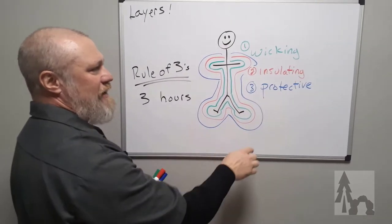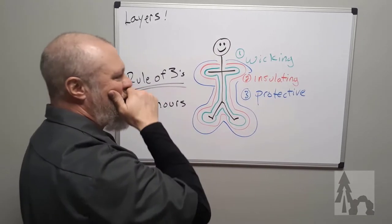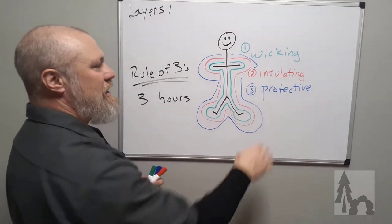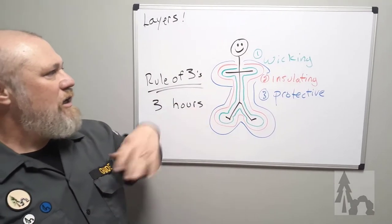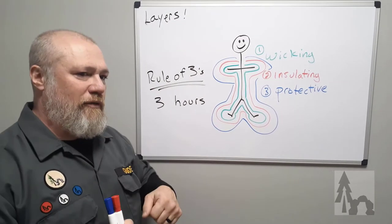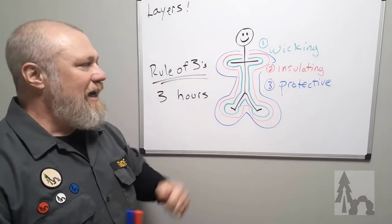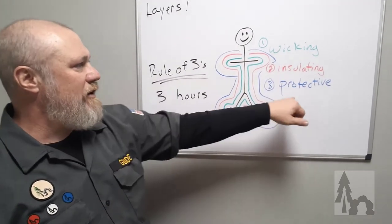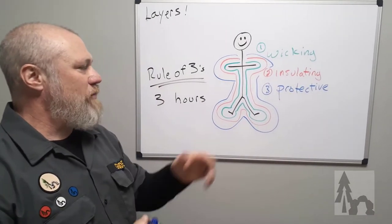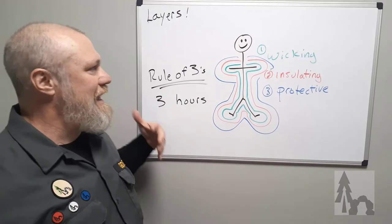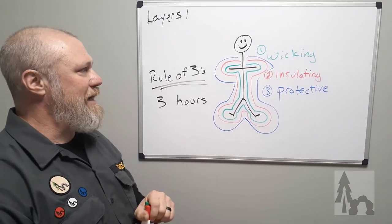Wicking, insulating and protective layer, you can don or doff your protective layer as needed. And then you can do your insulating layer. It doesn't have to just be one piece of clothing. It could be my uniform and a pullover vest and a sweater, and then maybe a light rain jacket over top of that. Depending on how warm or cold I get, I can alter my insulating layer.